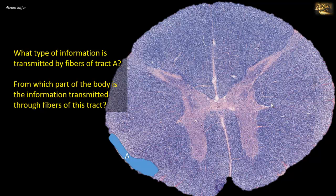This is the ventral spinal cerebellar tract. It is located on the anterior aspect of the periphery of the lateral funiculus. It conveys proprioceptive information — unconscious proprioception — from the lower limb to the cerebellum. At this location, it is a crossed tract. The fibers cross in the anterior white commissure, and the tract runs parallel with the dorsal spinal cerebellar tract, which is located just posterior to it.